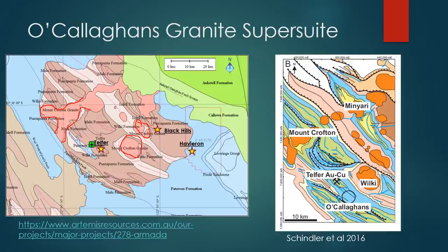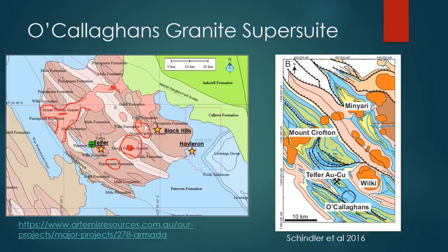What we have is the Wilkie Granite located here, the O'Callaghan's Granite which is actually the youngest granite and hosts tin-tungsten mineralisation, and in the north the Mount Crofton and Minyari granites. This intruded all of the stratigraphy highlighted previously. Later on we're going to be talking about the links between these granites and the mineralisation. The O'Callaghan Granite Super Suite is comprised of four different granitic bodies.